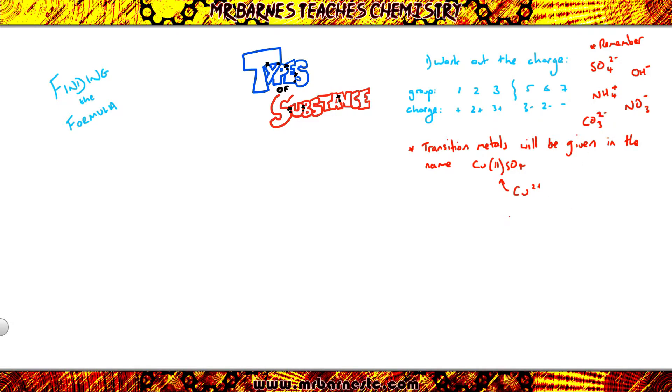Once you've got that, it's nice and easy to work out the formula. So for example, if we go with aluminium and oxygen reacting together to make aluminium oxide, aluminium is in group 3, and oxygen is in group 6. So aluminium is going to be Al 3+, and oxygen is going to be O 2-. So that's the first step.